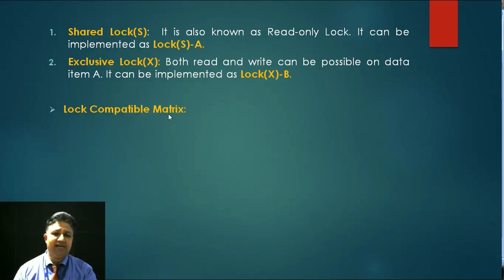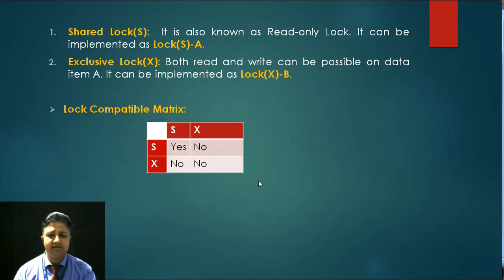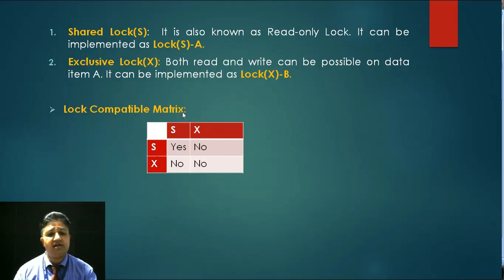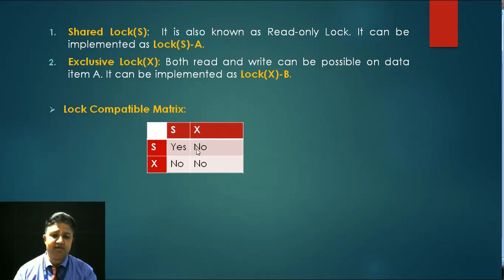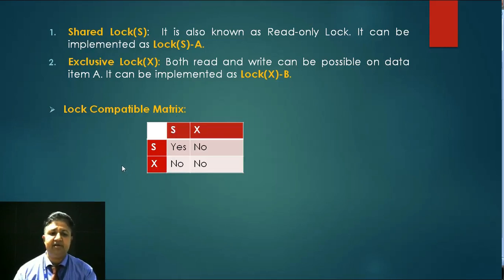There is one matrix known as the lock compatible matrix. In this matrix we have shared lock and exclusive lock. It indicates that if one transaction holds a shared lock on a data item, then another transaction can also implement a shared lock on that same data item — that is allowed. But if one transaction has a shared lock and another transaction requires an exclusive lock on a data item, then it cannot be implemented.